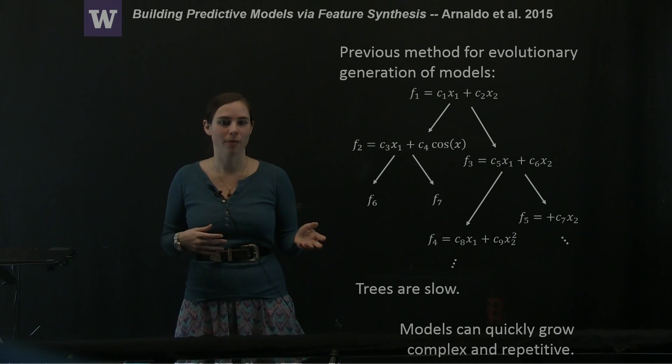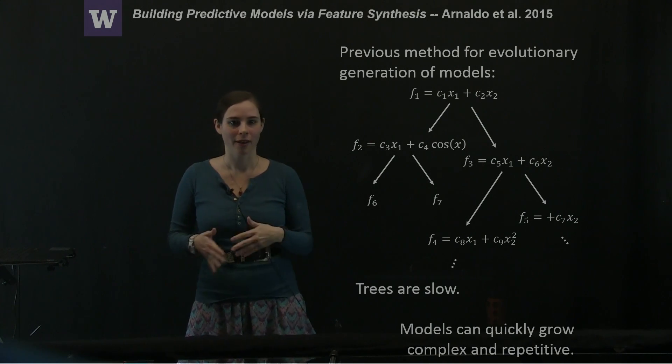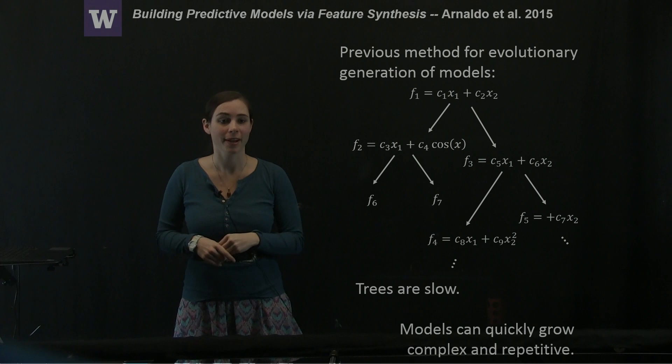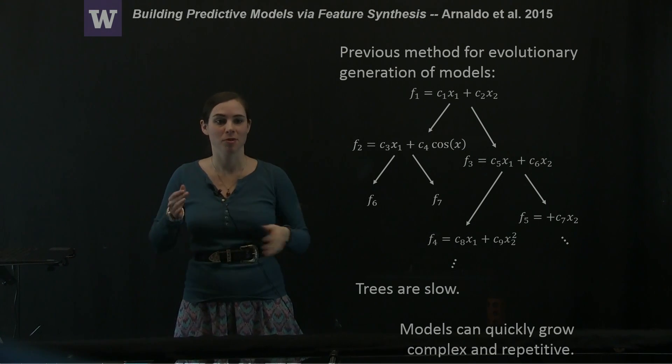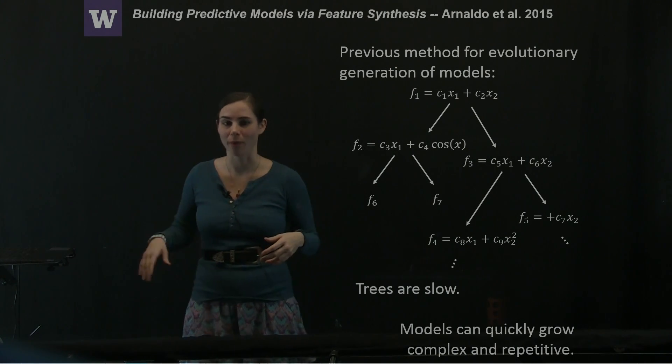They wanted to get around having to use something like a symbolic technique to store the models, but they still wanted to keep this evolutionary generation because that seems to be pretty good at exploring the type of model space you might need to fit these problems.